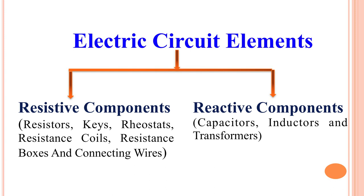There are other types of components called reactive components, also called active components. The resistance they offer can depend on experimental conditions — for example, the frequency of an AC source if an AC source is used in the electric circuit.